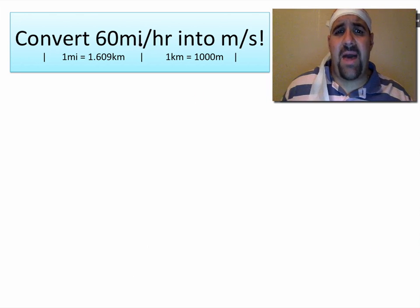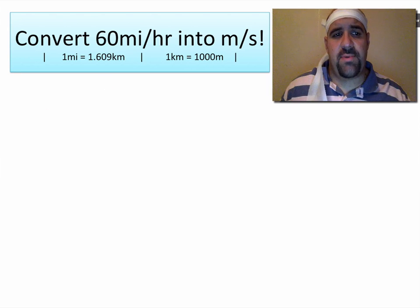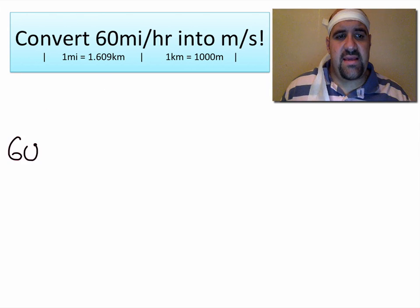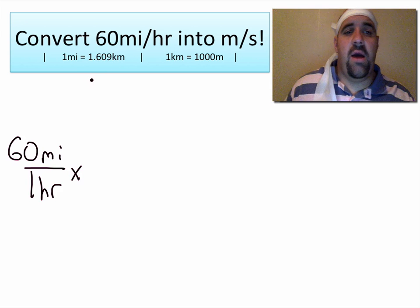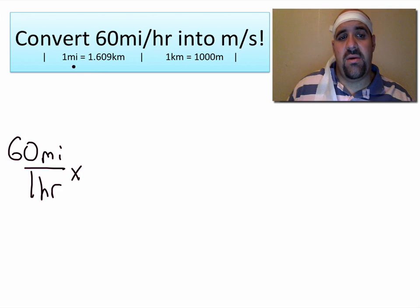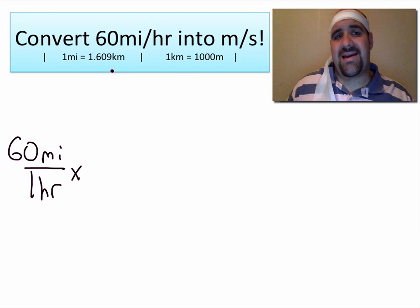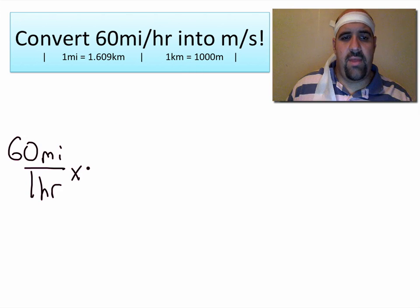We'll look at one more problem to make sure we have it down. We're now going to convert 60 miles per hour into meters per second. We have 60 miles per one hour. I need to get rid of the miles — I know there are 1.609 kilometers in a mile, and 1,000 meters in a kilometer. So I'll first convert miles into kilometers, then kilometers into meters, using a blank fraction with mile on the bottom.